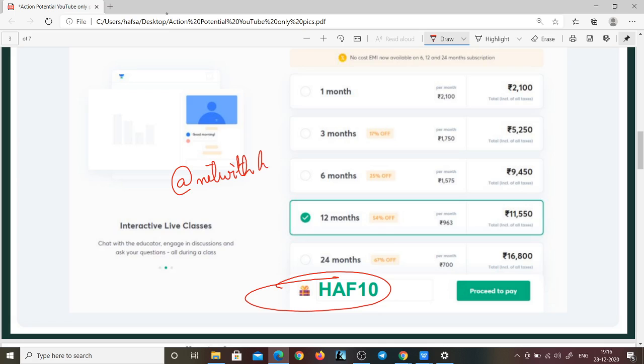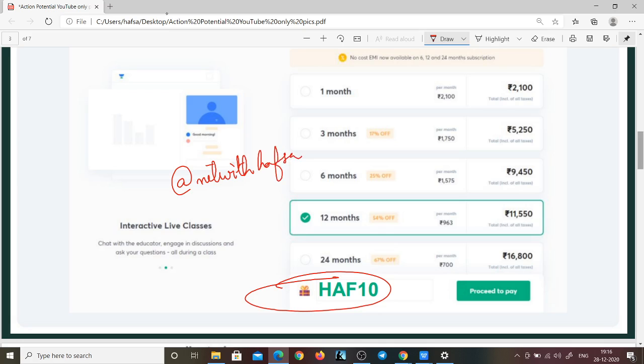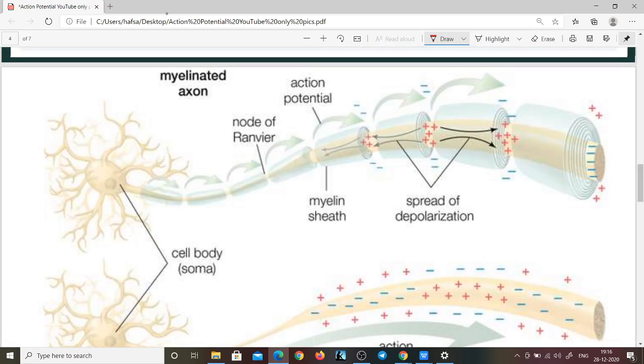Let's finally get into the action potential. We might think that action potentials is one action potential that jumps from the axon hillock to the end of the neuron, which is not true. And I hope we know by now that the action potential only goes across.